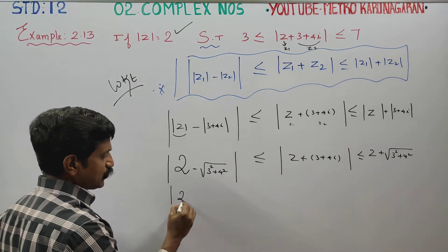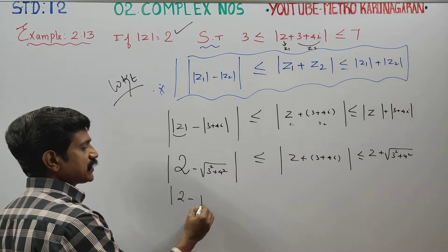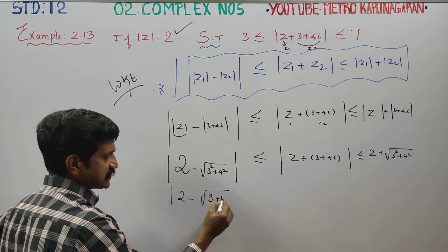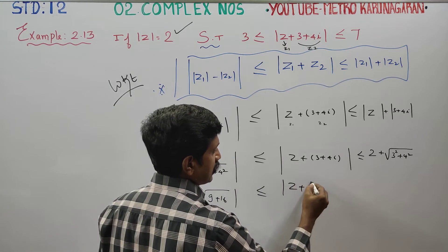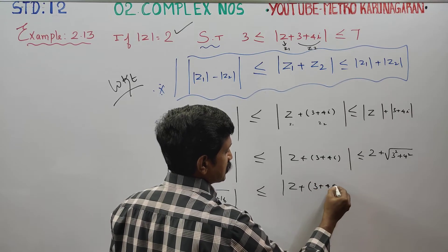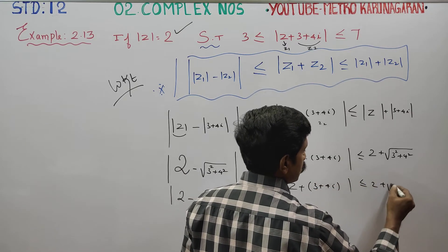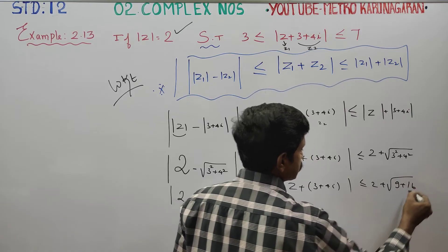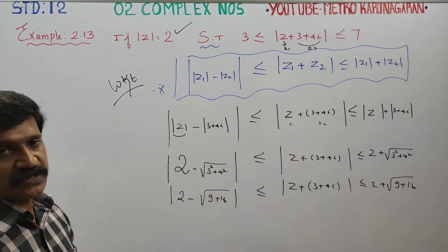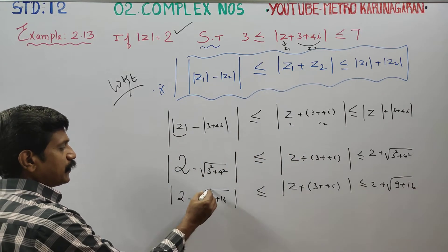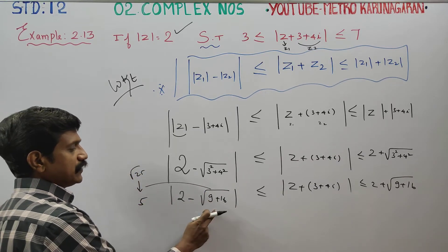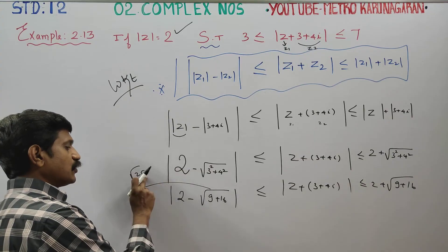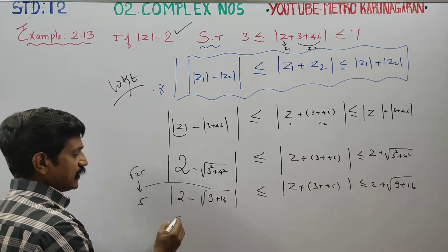Next stage: 2 minus, this becomes square root of 9 plus 16, less than or equal to z plus 3 plus 4i, less than or equal to 2 plus square root of 9 plus 16. 9 plus 16 is 25, root of 25 is 5. So 2 minus 5 and 2 plus 5.